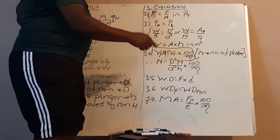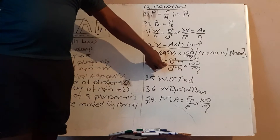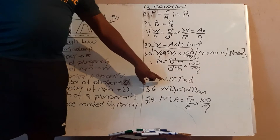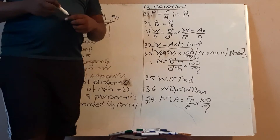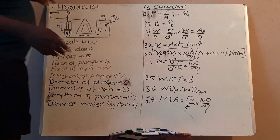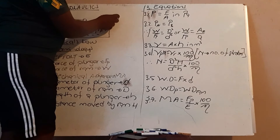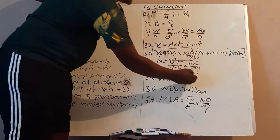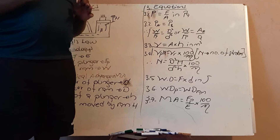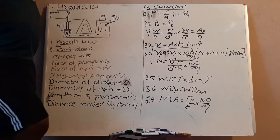You just need to memorize this equation — it's derived from volume of plunger times number of strokes equals volume of ram, with pi/4 cancelling pi/4. Work done (Wd) is force times distance moved, measured in joules. It can be the force of the plunger multiplied by h, or W multiplied by H. Work done by the plunger is equal to work done by the ram.